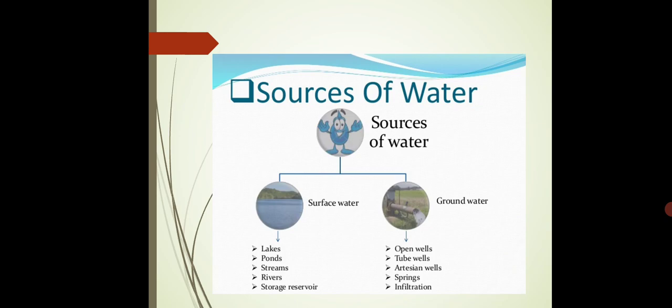Next is groundwater. We can obtain it from the open wells, tube wells, open wells means kuam, tube wells, artesian wells and springs and infiltration. So these are the sources of the water from where we can obtain the water.